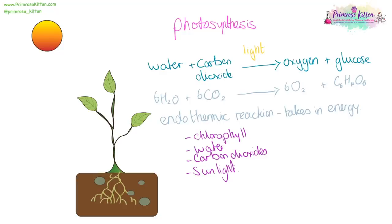The glucose from photosynthesis is going to be stored as starch. The most obvious example of starch is going to be potatoes.